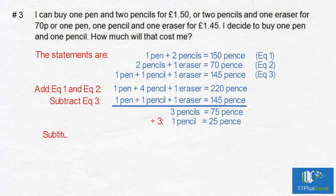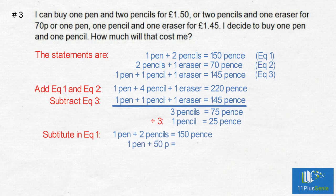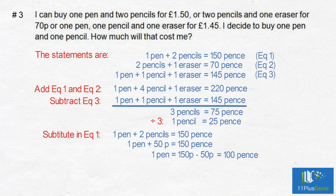We use statement one to find the price of a pen: one pen plus two pencils equals 150p, so one pen plus 50p equals 150p, meaning one pen costs 100p. I want to buy one pen and one pencil, which costs 100p plus 25p. The total cost equals 125p, which is £1.25.